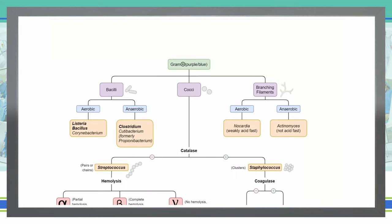If we're able to break it down to bacilli, we can then determine if it's aerobic or anaerobic, and that will help us determine if we're dealing with listeria, bacillus, corynebacterium, or clostridium, cutibacterium, which we used to call propionibacterium.